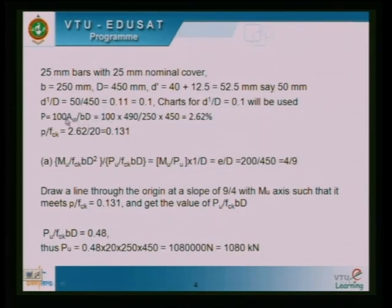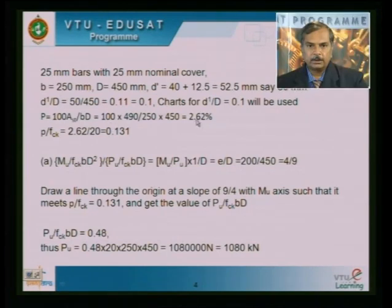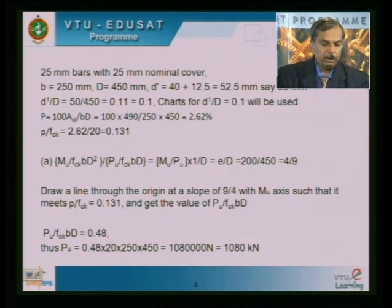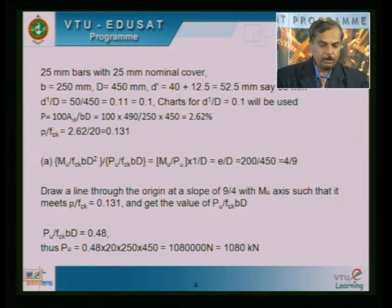The percentage of steel (100 Ast / BD) is given in the problem and works out to 2.62%. From this, P/Fck = 2.62 / 20 = 0.131.